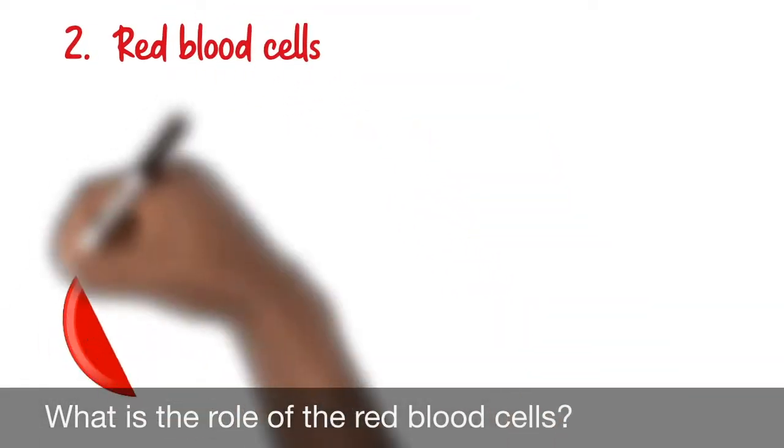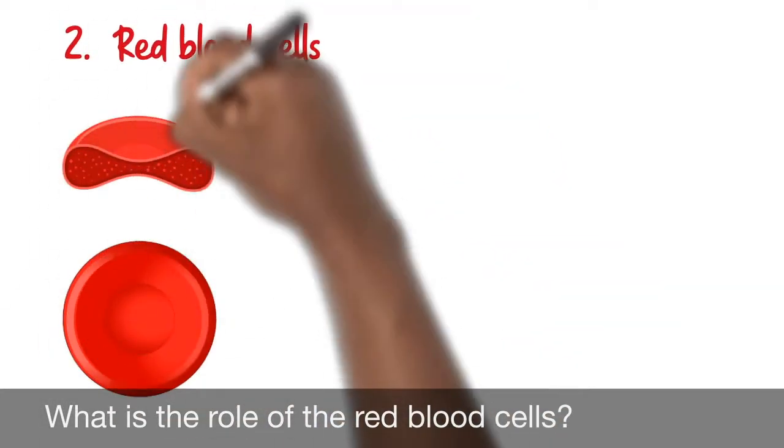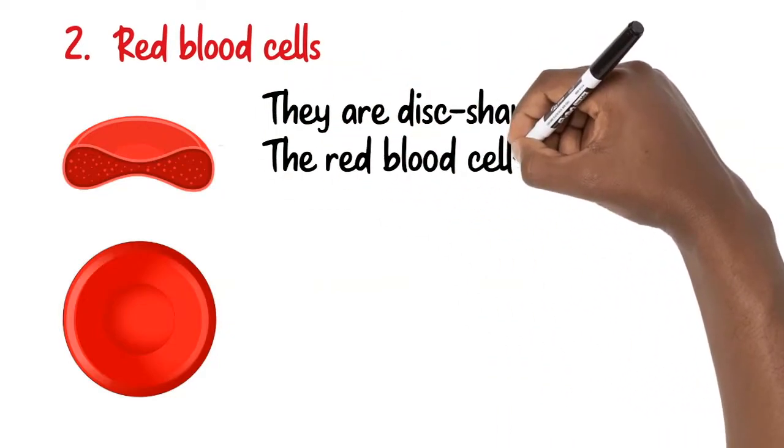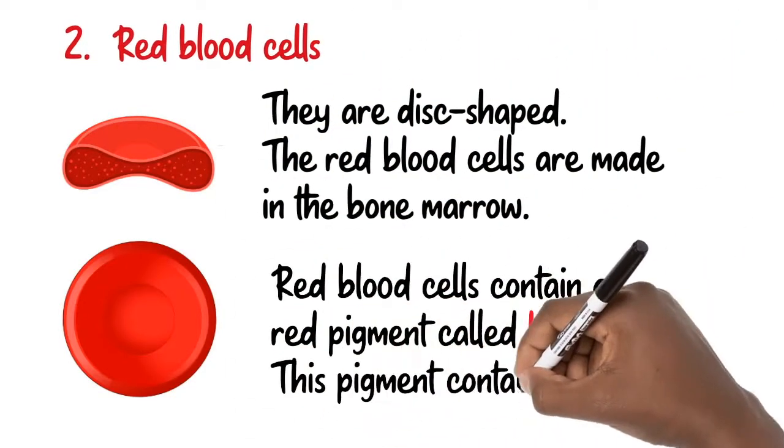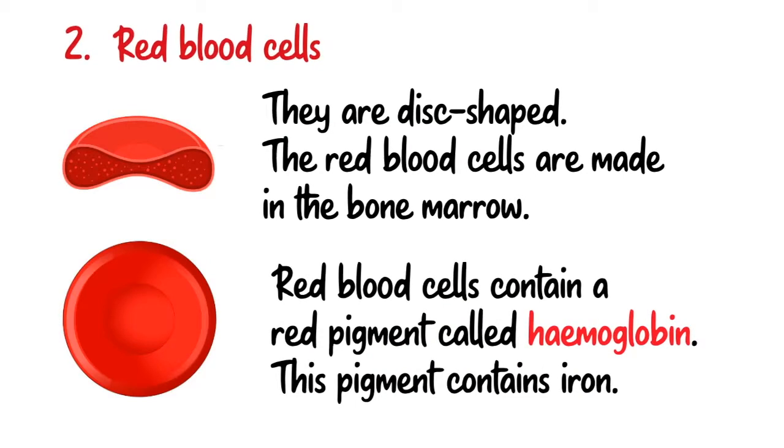The red blood cells are disc shaped. The red blood cells are made in the bone marrow. The red blood cells contain a red pigment called hemoglobin. This pigment contains iron.